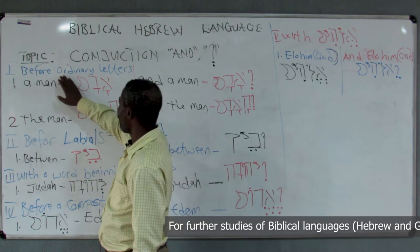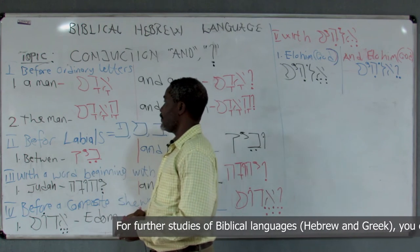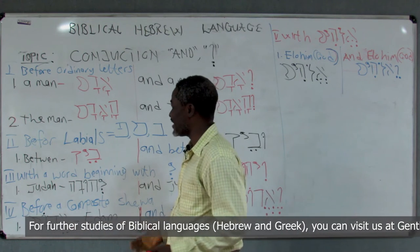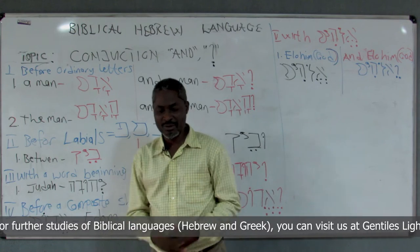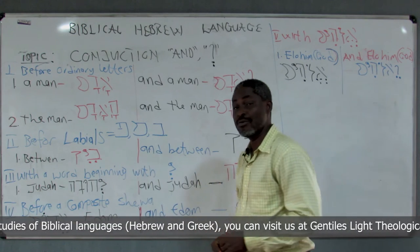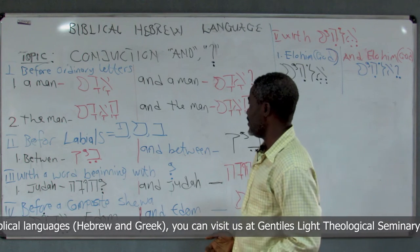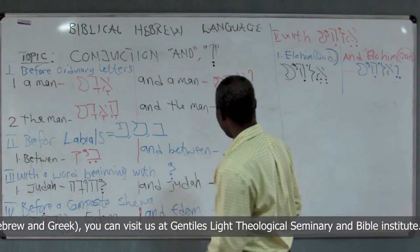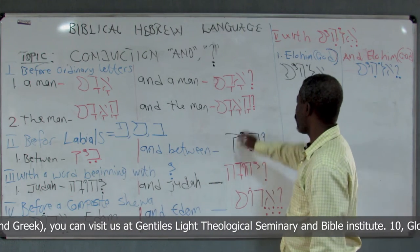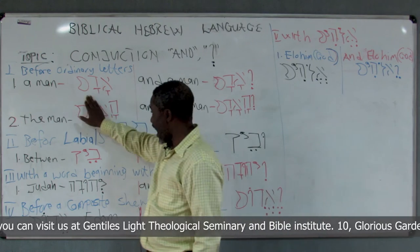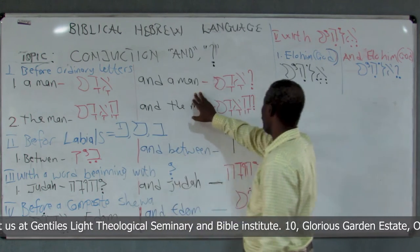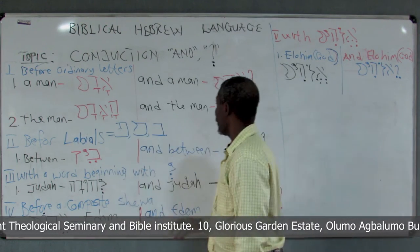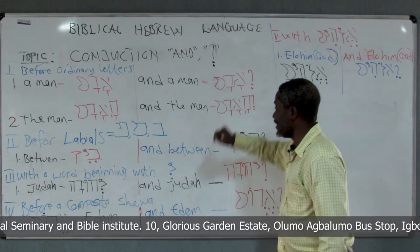Before an ordinary letter — when you use 'and' (waw) with another word like 'Adam,' which is just an ordinary letter with no guttural — 'Adam' means 'man.' So 'and a man' becomes 'waw-Adam.' And a man is 'waw-Adam.'